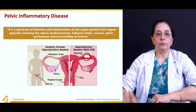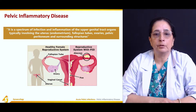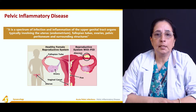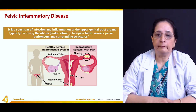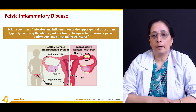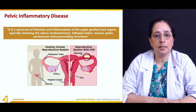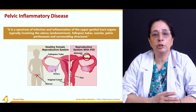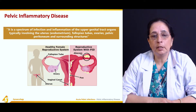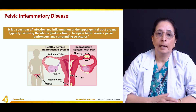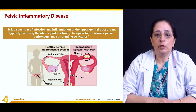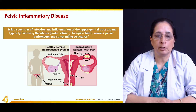What is pelvic inflammatory disease? Pelvic inflammatory disease is a spectrum of infection and inflammation of upper genital tract organs, typically involving the uterus, endometrium, fallopian tubes, ovaries, pelvis, peritoneum, and surrounding structures.